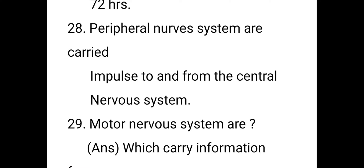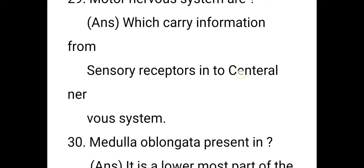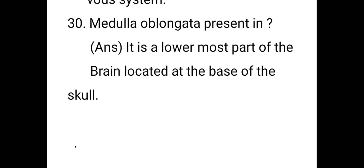What is the peripheral nervous system? The peripheral nervous system carries impulses to and from the central nervous system. There are two types of nervous systems: the central nervous system, consisting of the brain and spinal cord, and the peripheral nervous system, which is the network of branches from the spinal cord distributed all over the body. Motor neurons carry information from sensory receptors to the central nervous system.